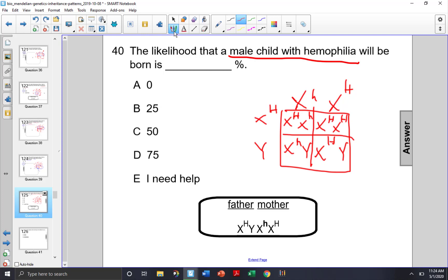And we're looking for one that has a little h and not a big h. So this one right here is a X little h Y, so that is one out of four.